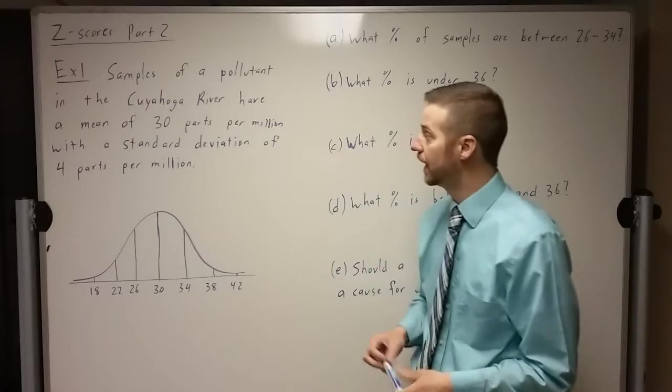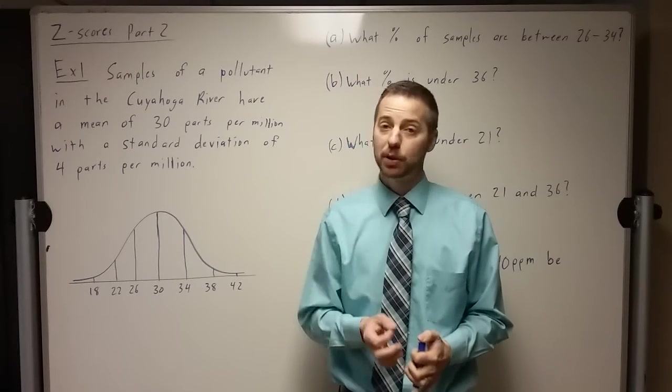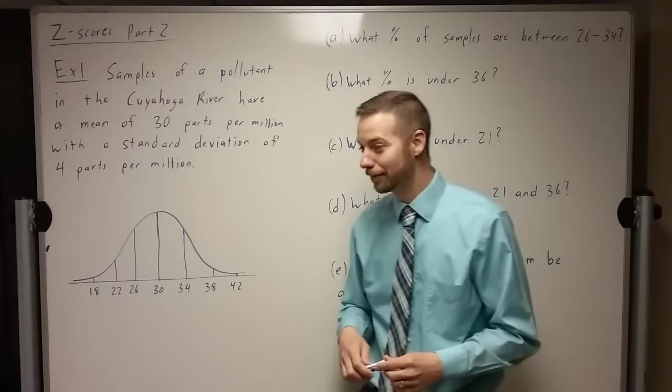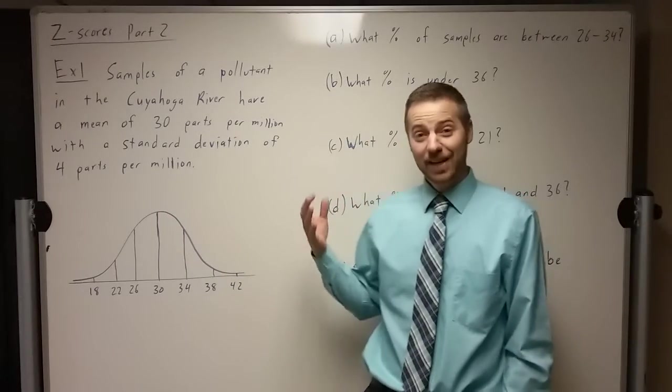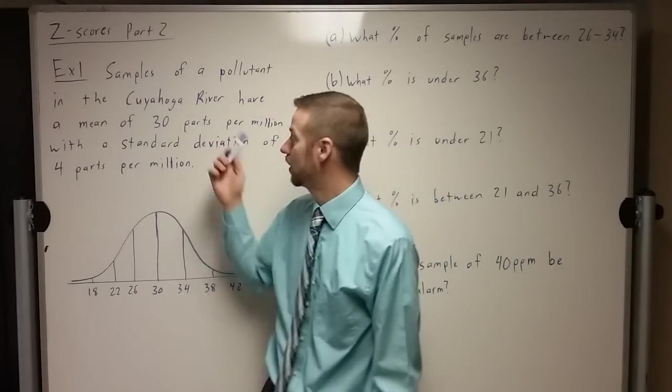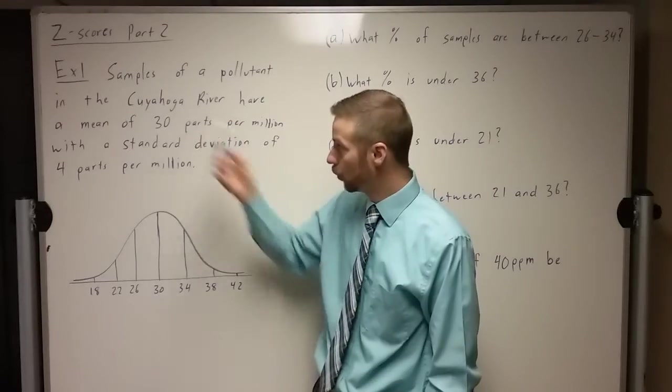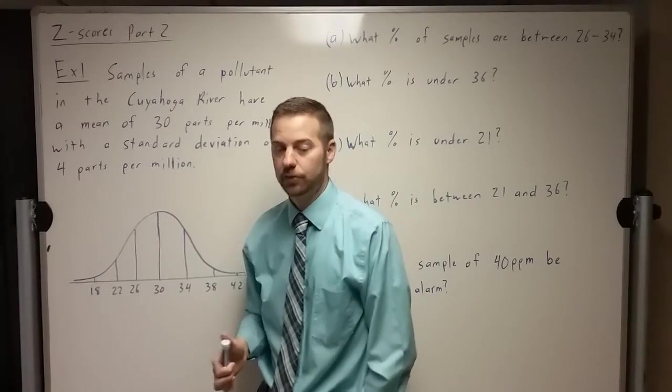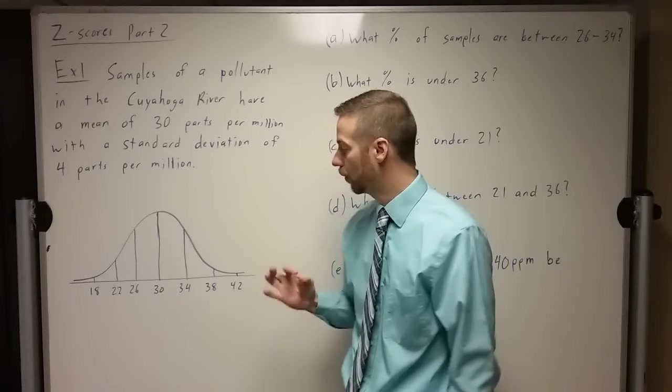So I have an example for us to use today. We're talking about samples of a pollutant that are taken from the Cuyahoga River. The Cuyahoga River, if you don't know the history, was very polluted in the past, so polluted that it caught on fire. The entire river caught on fire. So we're gonna look at if there's a certain pollutant in the Cuyahoga River that has a mean of 30 parts per million. That's a really common measurement, is per million pieces how many of this thing is in there. And then the standard deviation of this is 4 parts per million.